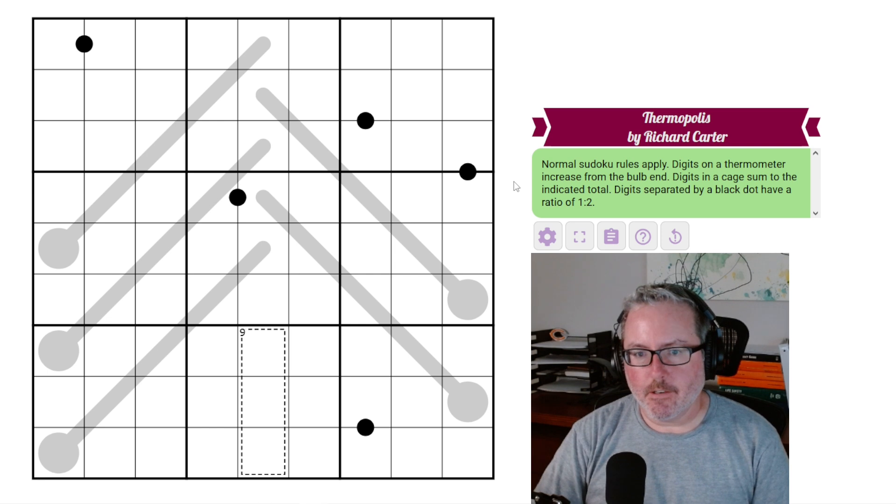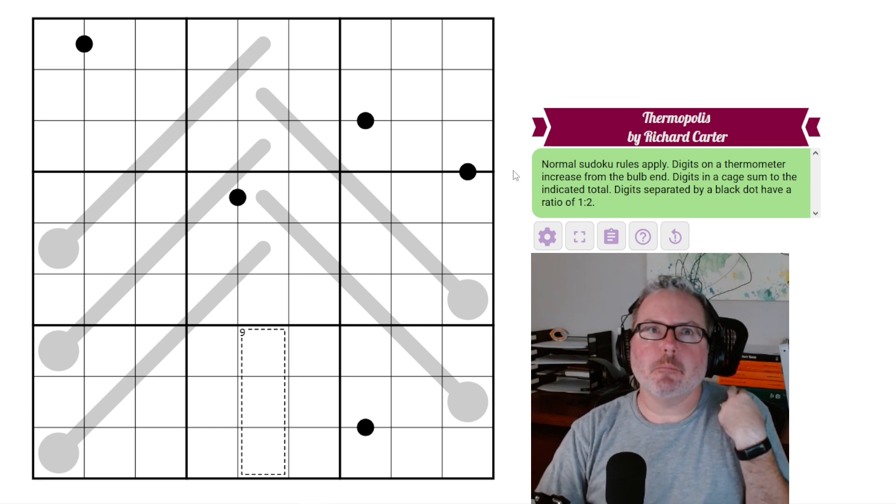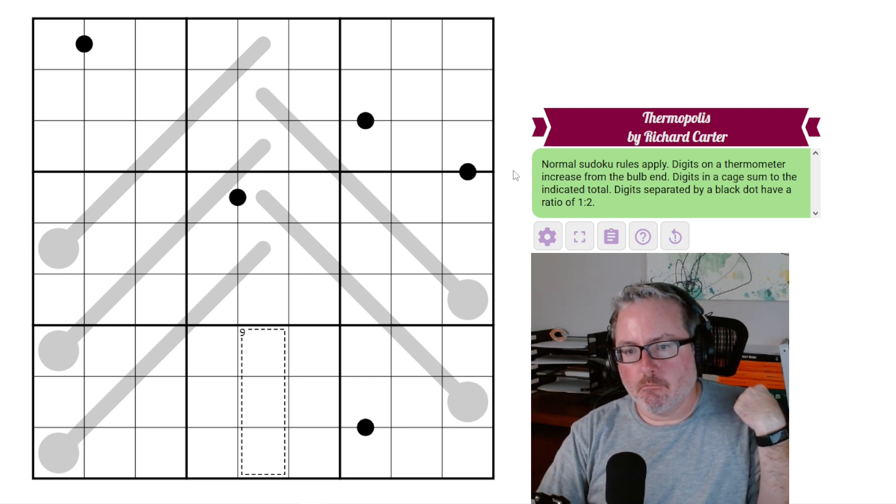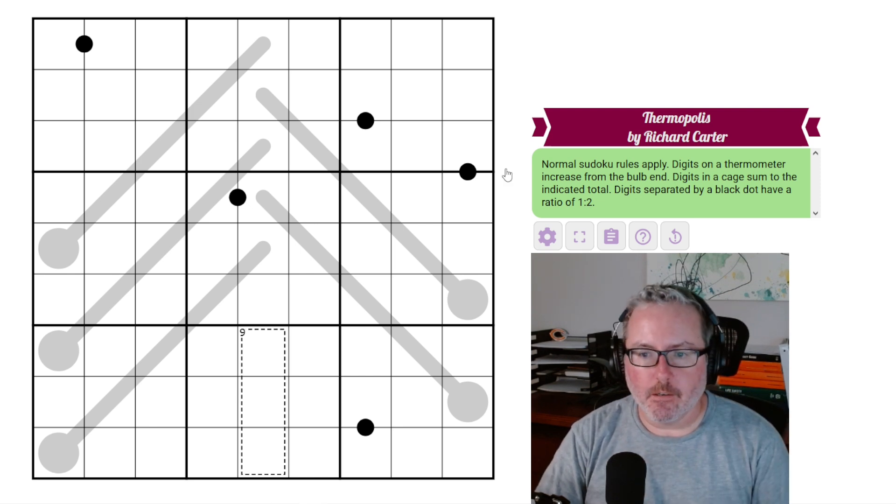And that's it. Those three fairly simple, and we call them, I guess, semi-basic rule sets for variant Sudoku. Nothing out of the ordinary is probably the better way to put it there. So, that said, let's jump into this one and see if we can get it figured out.